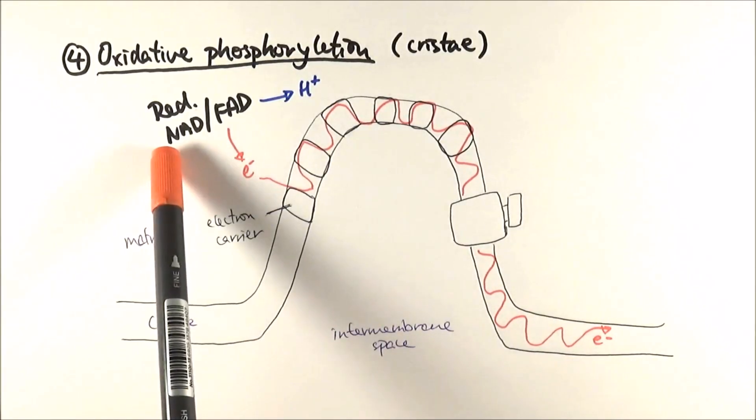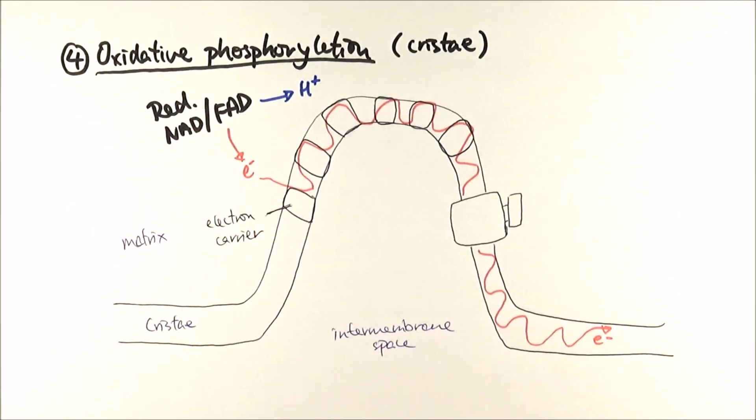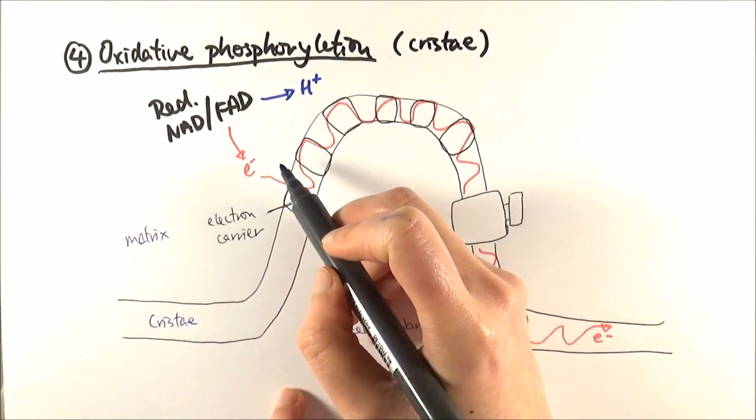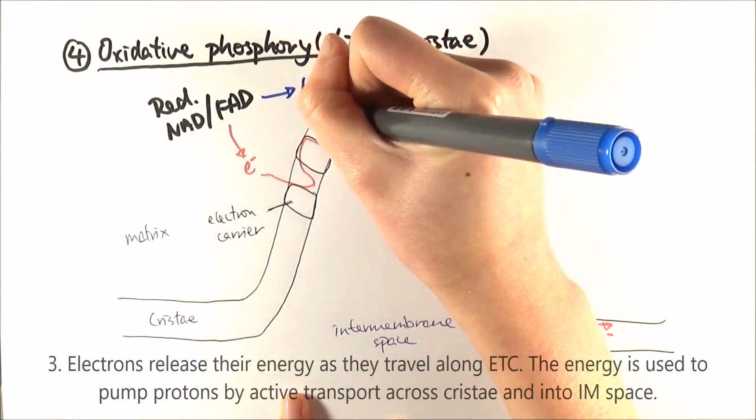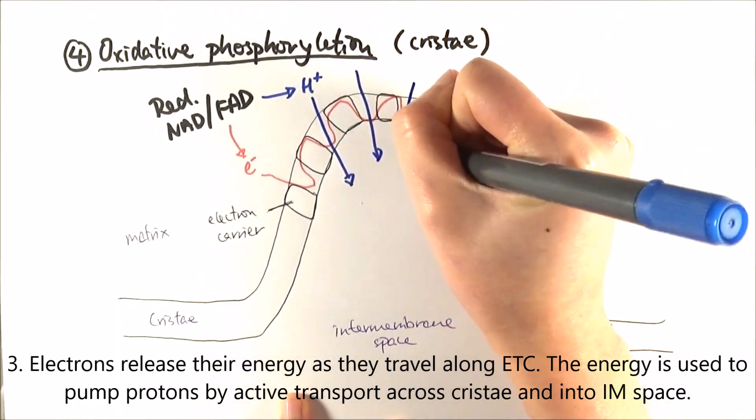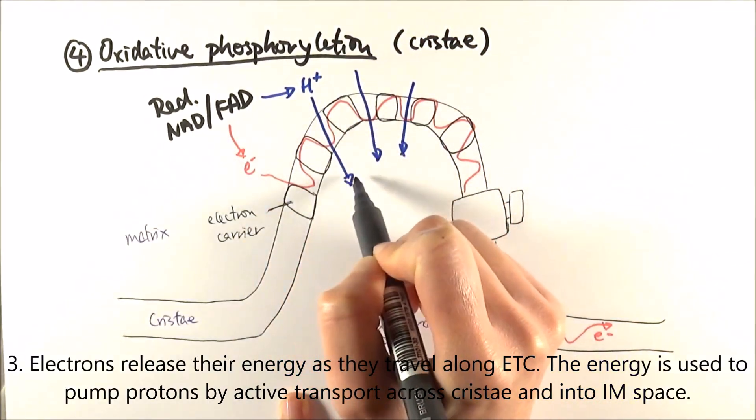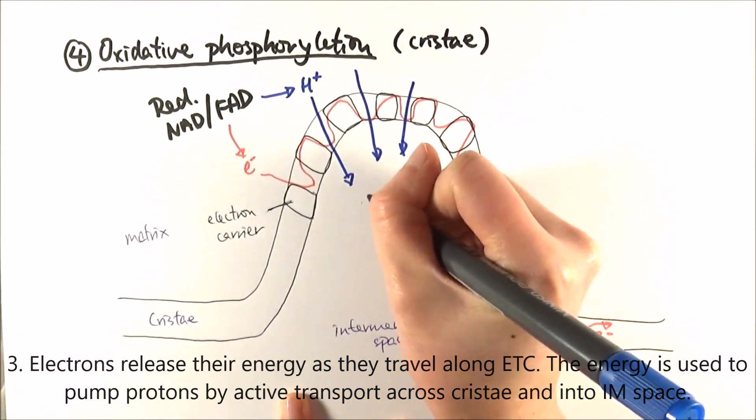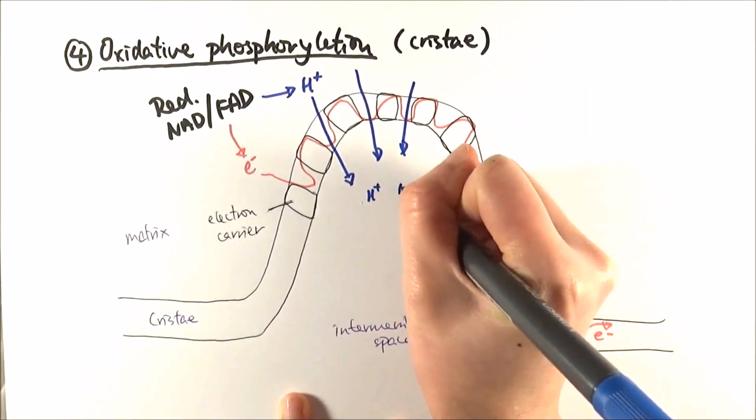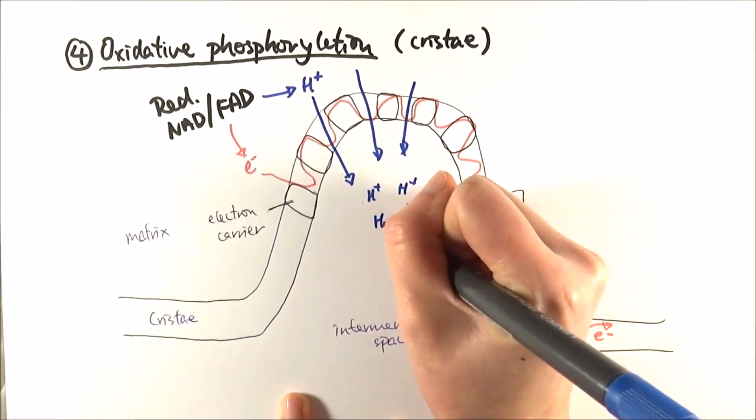Now, for the breaking of bonds here, they release the electrons, and these electrons actually have a very high energy within them. So when they enter the electron carriers, the electrons release energy to pump protons across by active transport. So imagine there are lots of protons that were released here. They just basically pump it across.